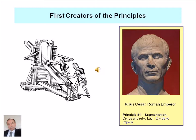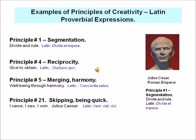Julius Caesar, when he said 'Divide et impera' — which means divide and dominate — can be regarded as a creator of the segmentation principle, which is the first principle from the TRIZ list of 40 principles. Examples of the correspondence between Latin proverbial sayings and TRIZ principles can be continued: segmentation — 'Divide et impera'; reciprocity — 'quid pro quo'; merging — 'concordia salus'; and skipping or being quick — 'veni, vidi, vici'.